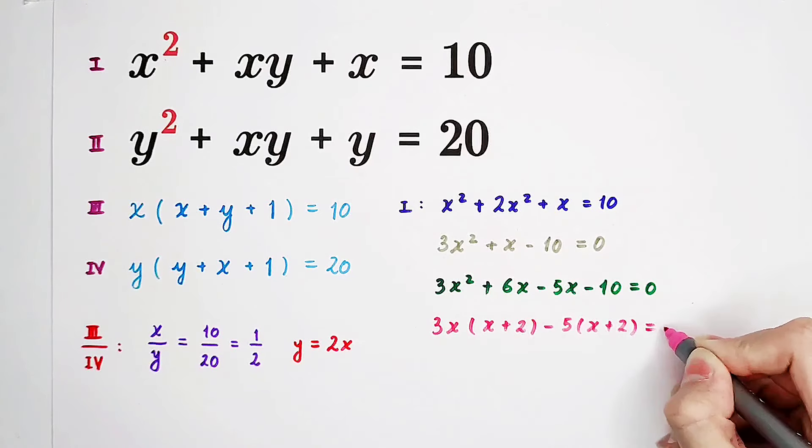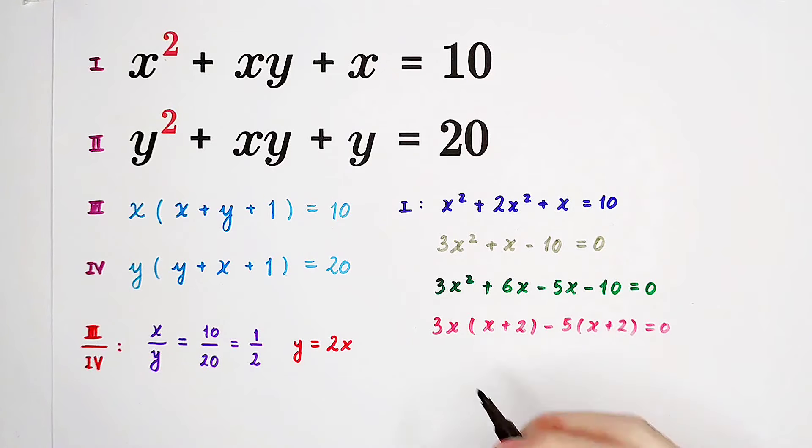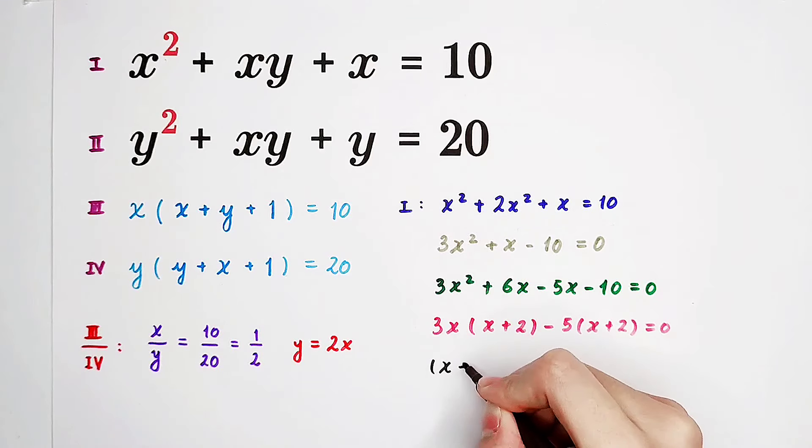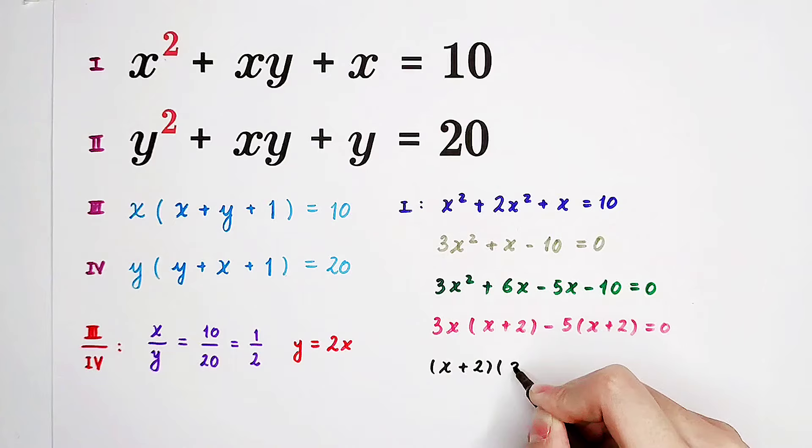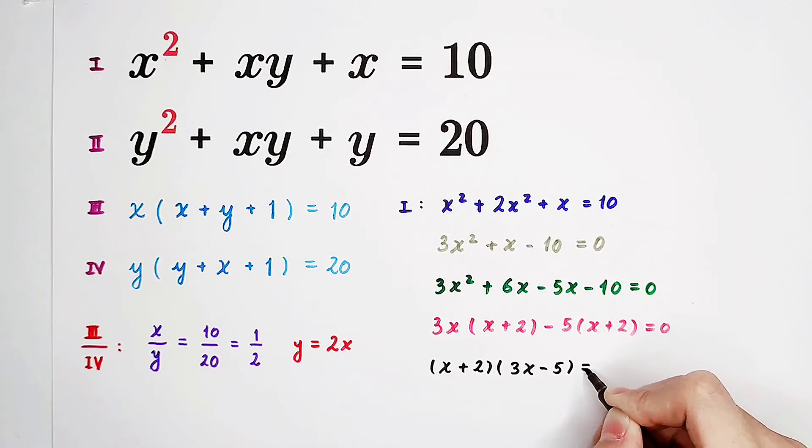Minus 5 is taken out, and in the bracket it is x plus 2. So x plus 2 can be factored out: (x plus 2) times (3x minus 5) equals 0.